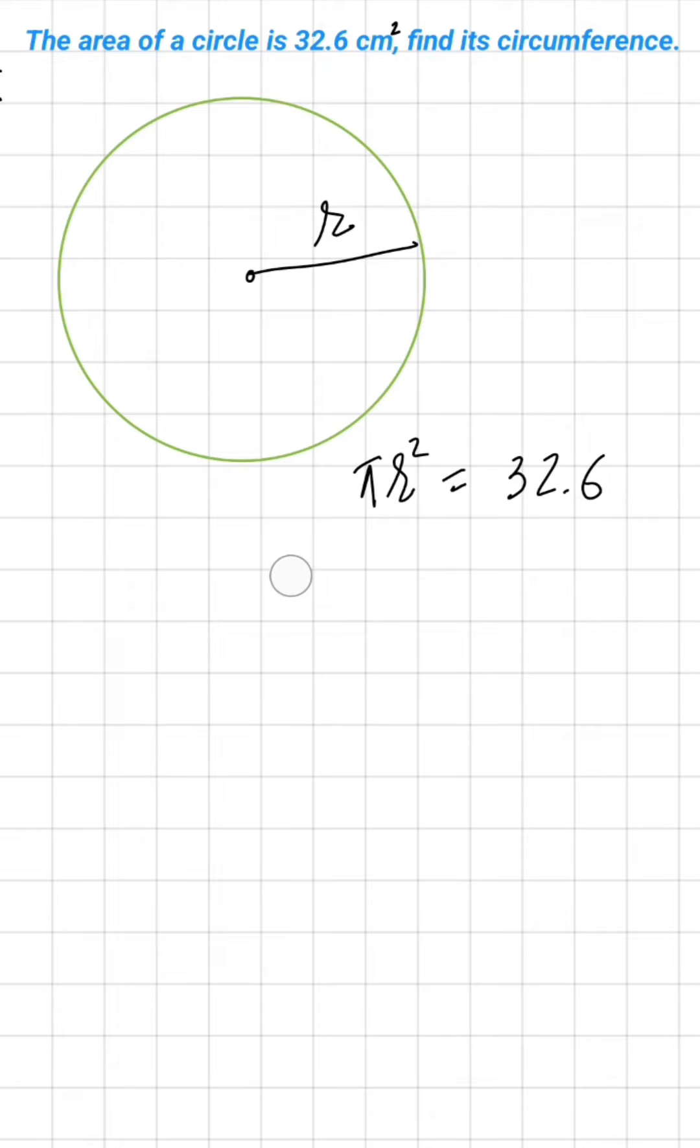So you can write πR² = 3.14 × R² = 32.6. Now R² is equal to 32.6 divided by 3.14.